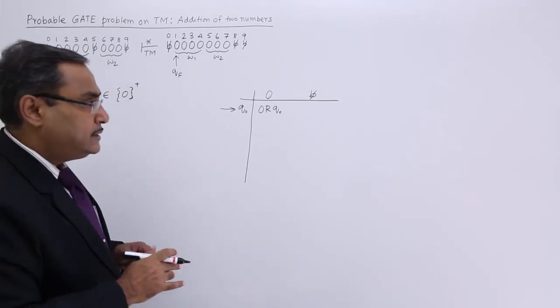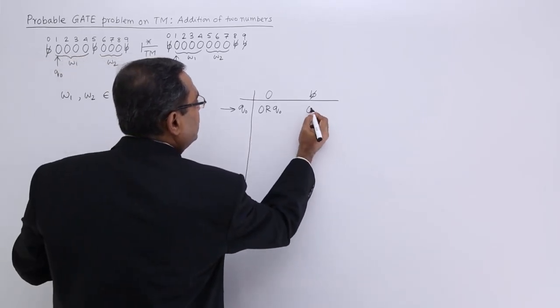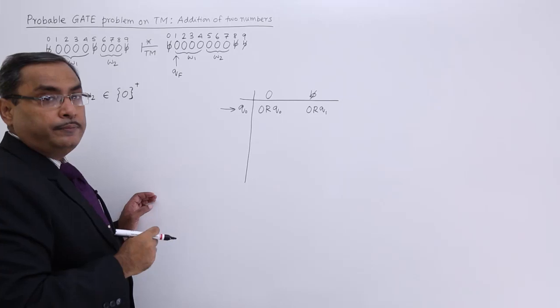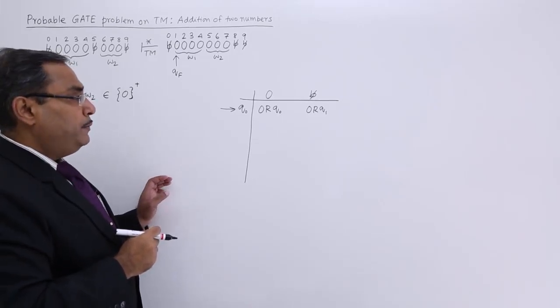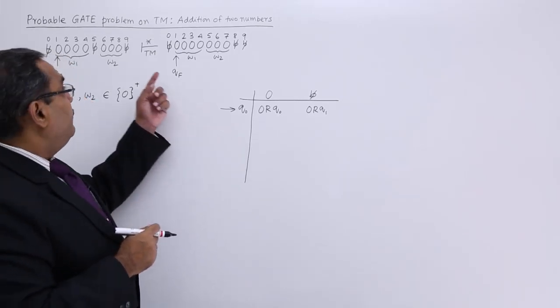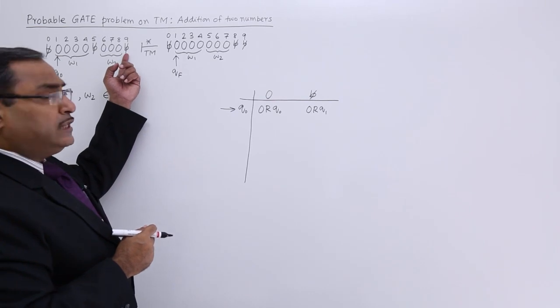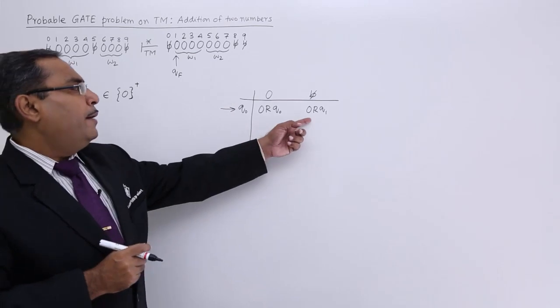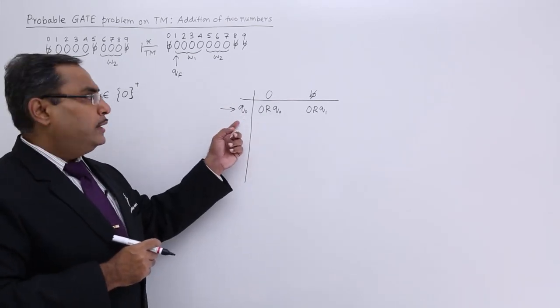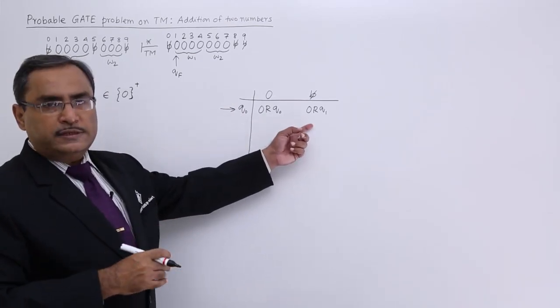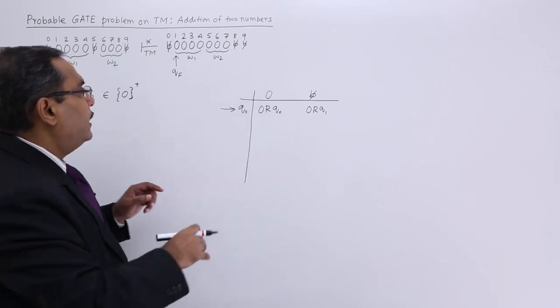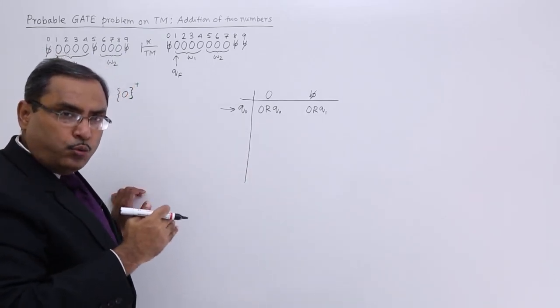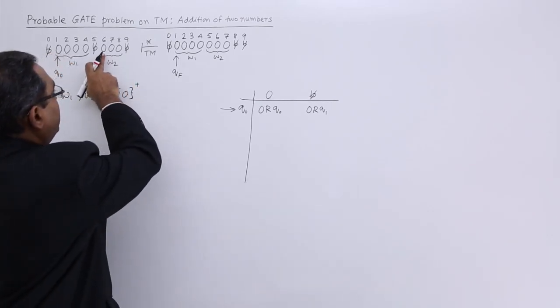Then I shall get this blank at the fifth place. This blank will be replaced by 0 and I shall go to the right then I shall make this Q1. Why Q1? Because I should change the state. When I shall get this particular blank I should not make it 0 and proceed to the right hand side. That is why I am going to this particular state Q1 where the blank treatment will be having some different logic. I have made this particular blank as 0 and now my state is Q1 and I am moving towards the right.